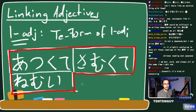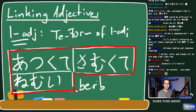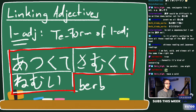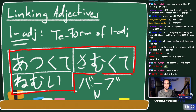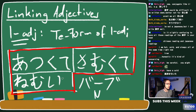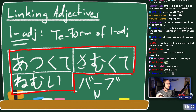So with three separate adjectives, we get to treat the whole thing like it's just one, and we can add a noun after it. We can also make this te-form and add more adjectives - there's no limit. You just have to stop at some point because your sentence can't be infinite.